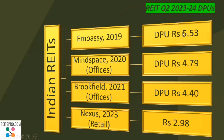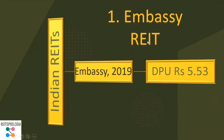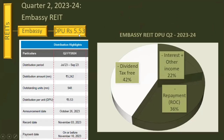The REIT Q2 FY2023-24 DPUs for all REITs, along with their IPO years, are shown on screen. Let's take up Embassy REIT first. Embassy REIT gave a DPU of Rs 5.53. The DPU is divided into interest and other income, repayment of loans, and tax-free dividend. The total amount of Rs 5.53 was paid on or before the stated date, with the record date also mentioned on screen.